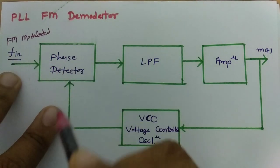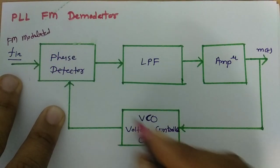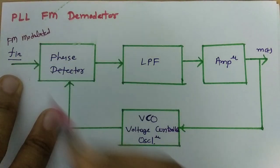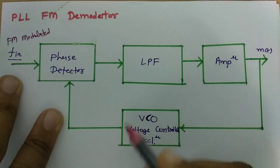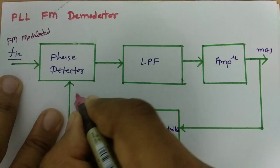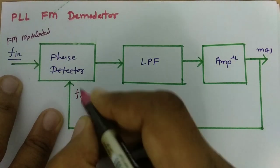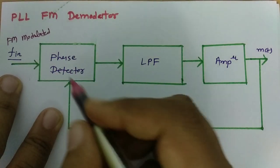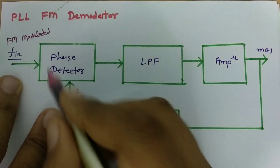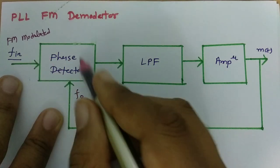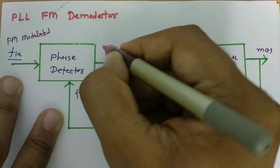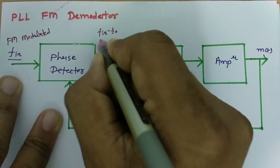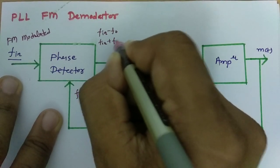The phase detector has two inputs. One input is the FM modulated signal, and the second is the output of the VCO, whose frequency is F0. The phase detector circuit is somewhat similar to a multiplier, so the output will be F_in minus F0 and F_in plus F0.